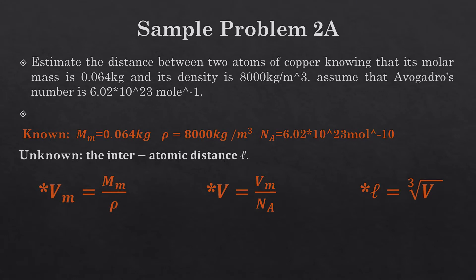Here is our problem, Sample Problem 2A. Please stay with me. The question is: estimate the distance between two atoms of copper, knowing that its molar mass is 0.064 kg and its density is 8000 kg/m³. Assume that Avogadro's number is 6.02×10²³ mol⁻¹.